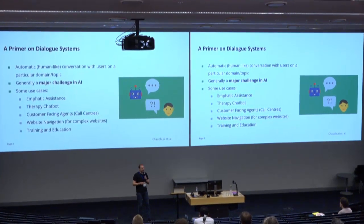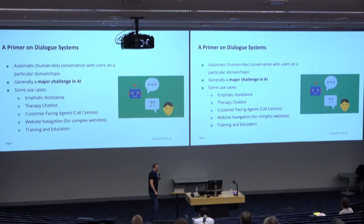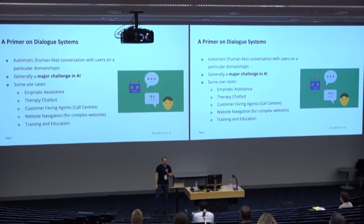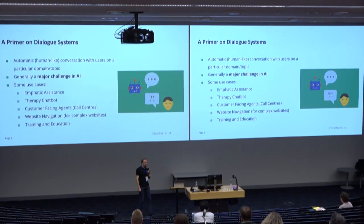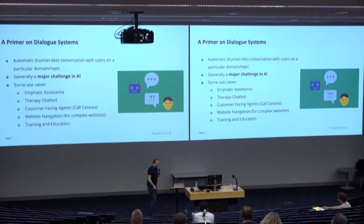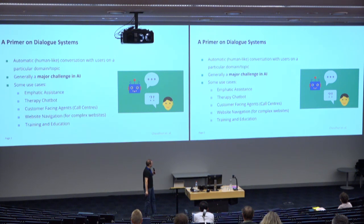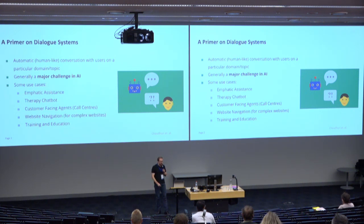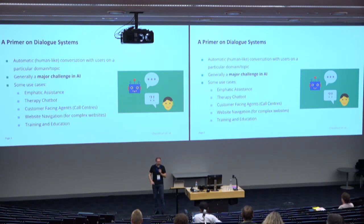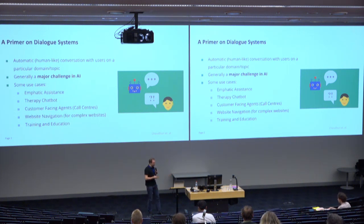Dialogue systems are a major challenge in artificial intelligence. There is the famous Turing test from 1950, where Alan Turing devised methods to test how intelligent an AI system can be. It's still a major challenge 70 years down the road. There are also various practical use cases: more empathic assistance, therapy chatbots, call centers, training and education, or complex navigation use cases.